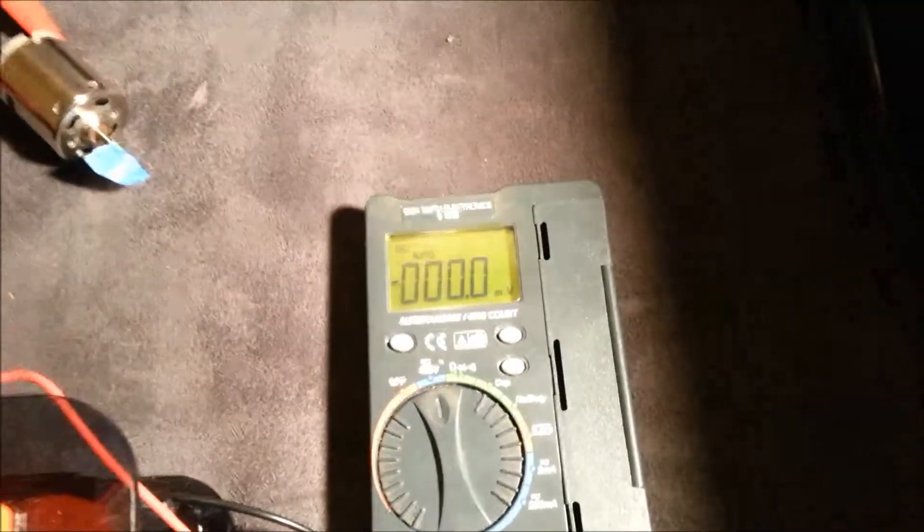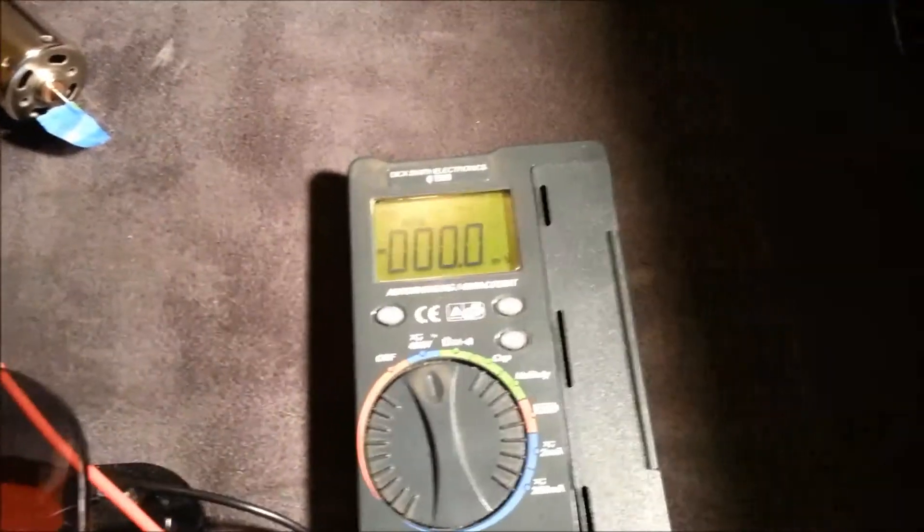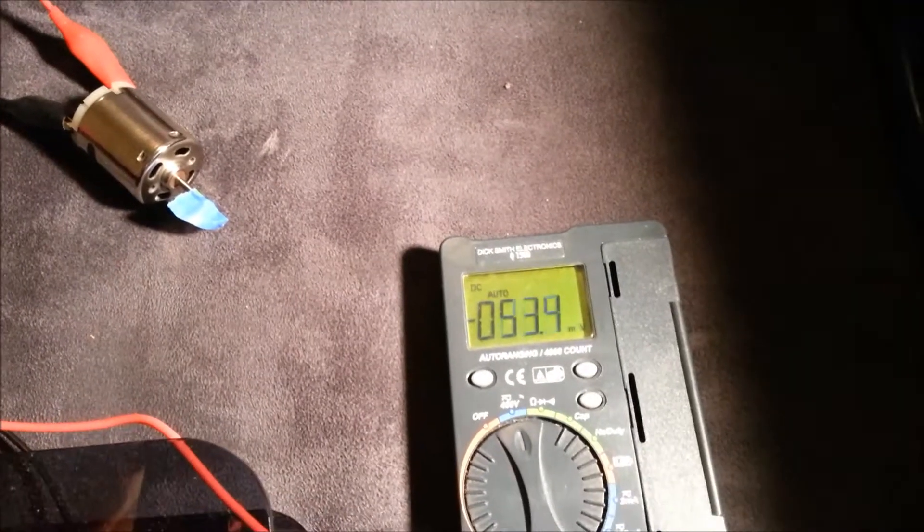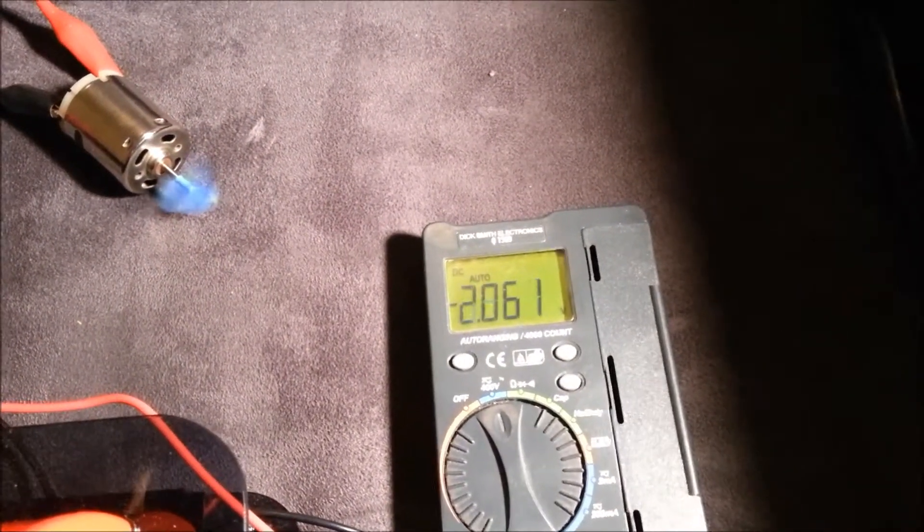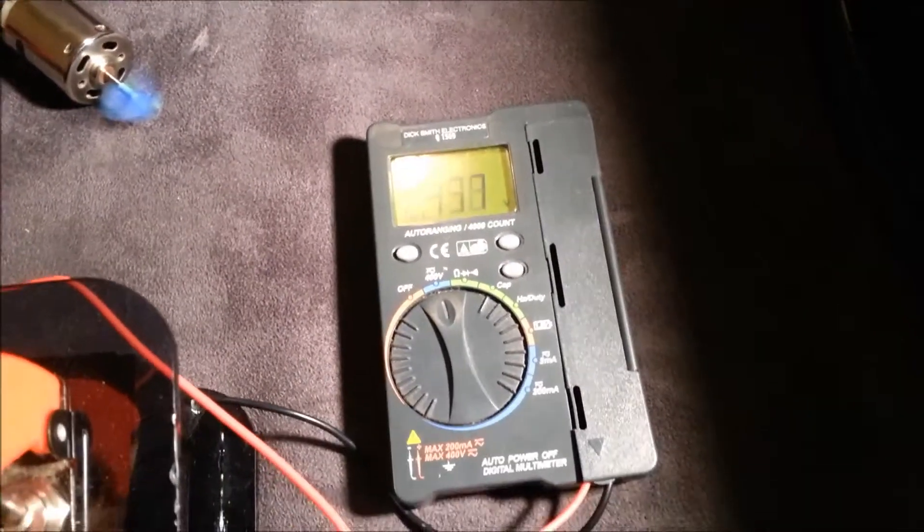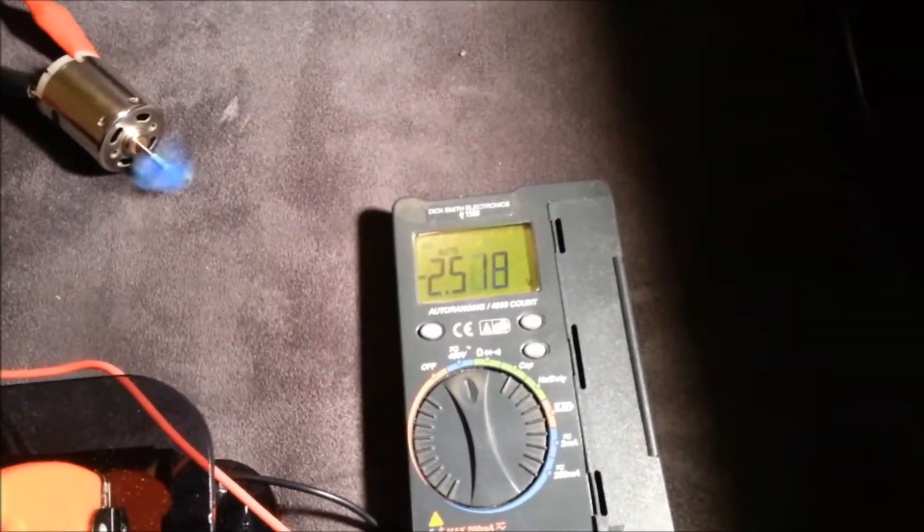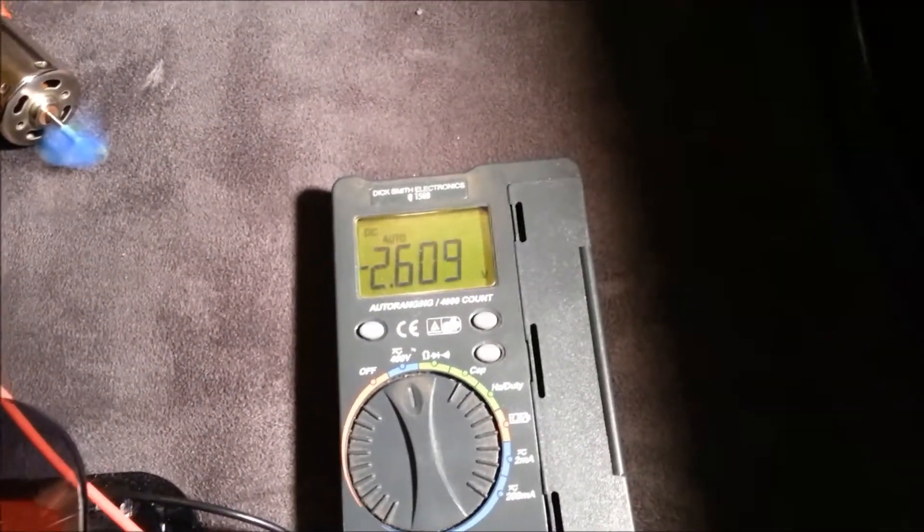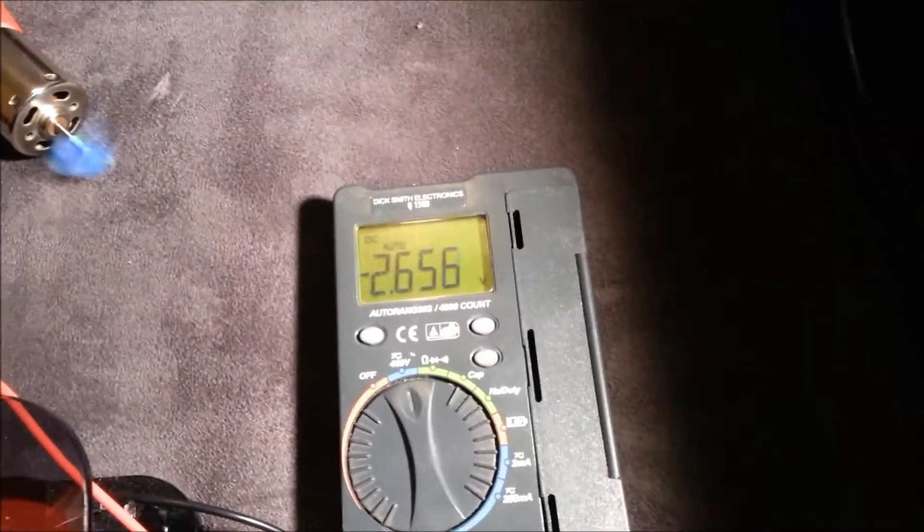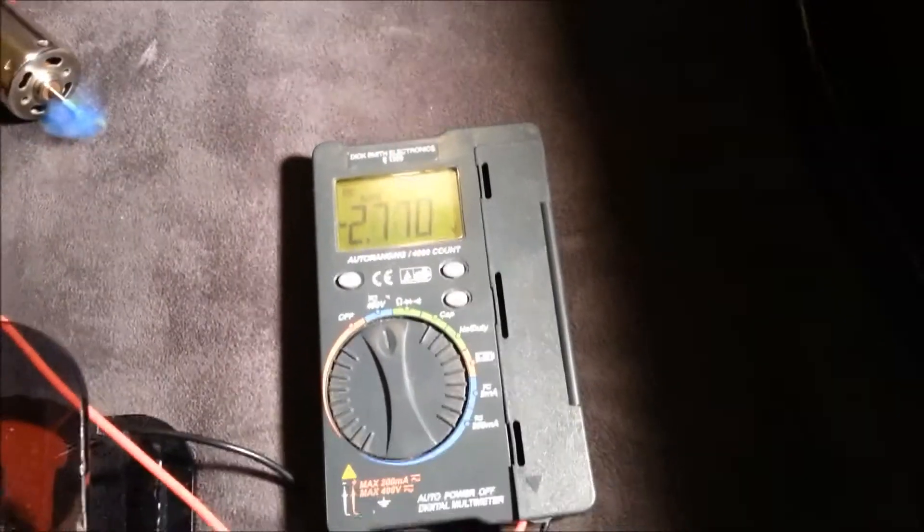Now because it's PWM on an H-bridge, that's why I dial it up. It confuses the multimeter a little bit. It's not really sure. Well, it says 2.5V backwards, but in actual fact it's of course 12V but at a lower duty cycle.